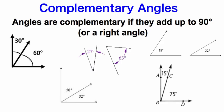Complementary angles. Angles are complementary if they add up to 90 degrees or to a right angle. You can see all these pictures below, all of these pairs of angles add up to 90 degrees.